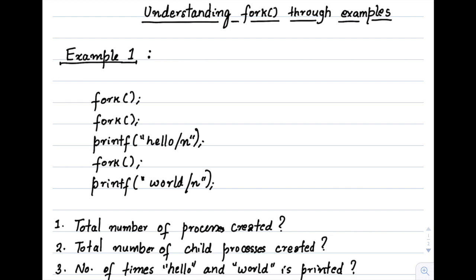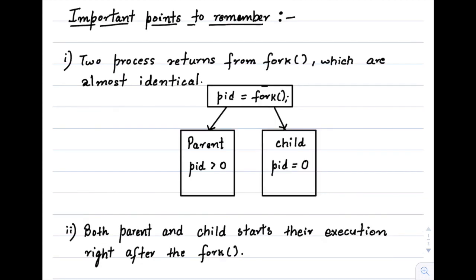Hello friends. In the last two videos, we looked at how a new process is created using fork and managed using exec, wait and exit functions. Also in the last video, I gave an example through code to understand these functions. Let's now look at some more examples to understand these functions. Before we solve these problems, let's revise some important concepts about fork and C programming.